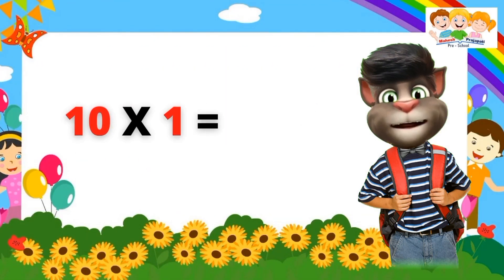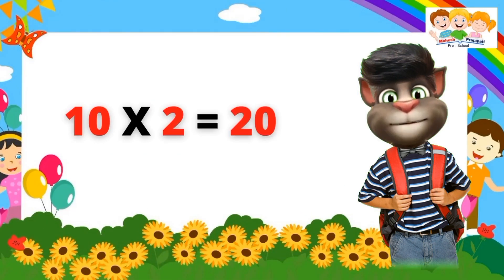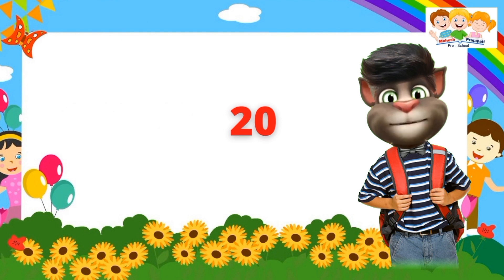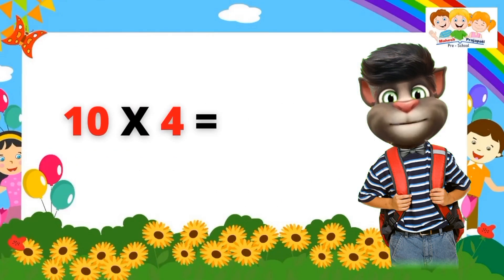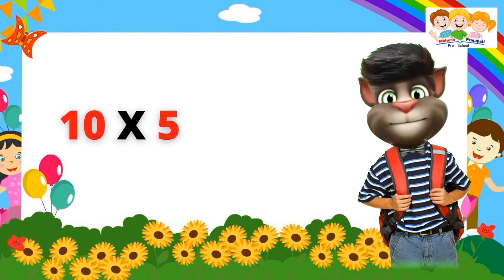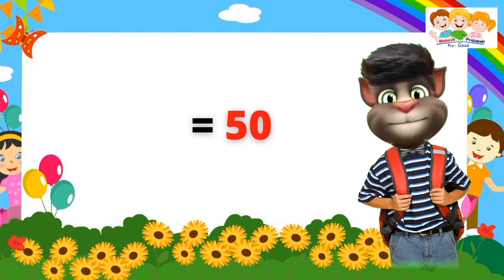Table of Ten. Ten one's are ten. Ten two's are twenty. Ten three's are thirty. Ten four's are forty. Ten five's are fifty.